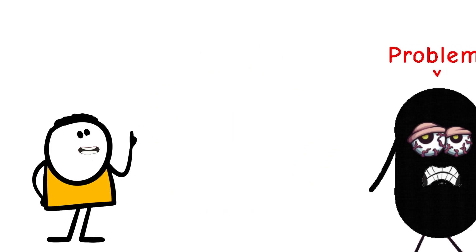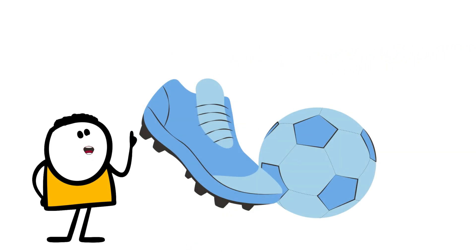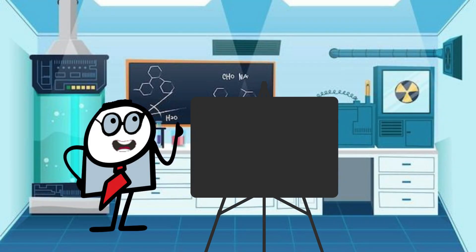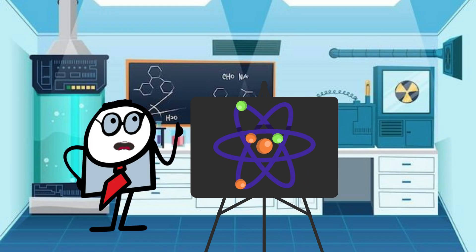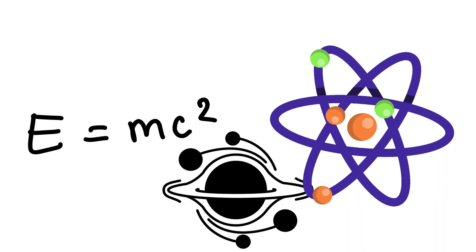But that simplicity hides a huge problem. Here's the real kicker. Our best scientific theories just stop working at the singularity. Einstein's general relativity works great for planets and galaxies. Quantum mechanics rules the world of atoms and particles. But when you try to use both on a singularity?